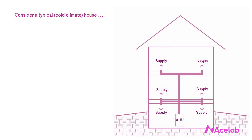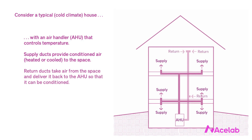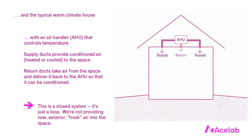A typical cold-climate house will have an air handler that controls temperature. It will have supply ducts that provide conditioned air, either heated or cooled, to the spaces inside, and return ducts that take air from the house and deliver it back to the air handler so that it can be conditioned. The warm-climate house is similar, but the air handler is usually located in the attic.